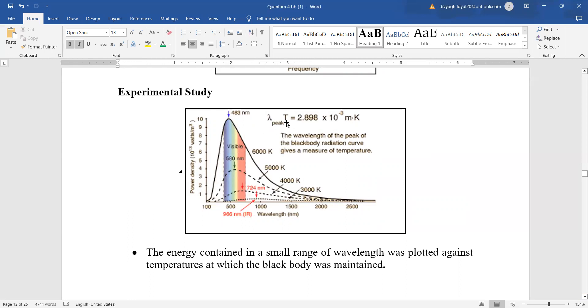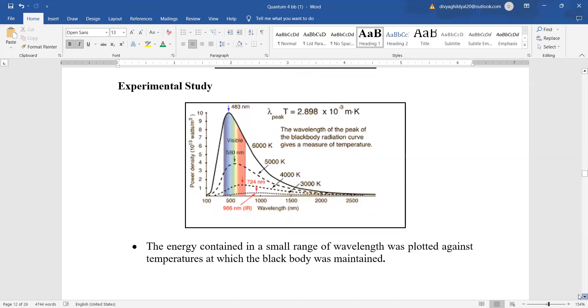Now let us look. I told you lambda m into t is a constant. Now see as you increase the temperature wavelength decreased and as you were decreasing the temperature wavelength increased. So the energy contained in the small range of wavelength has been plotted against temperature at which black body was maintained. This plot is very important along with a good labeling.